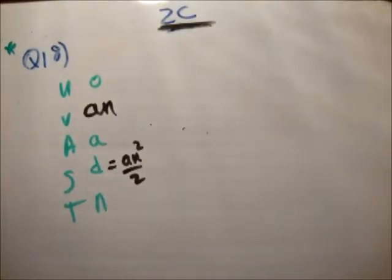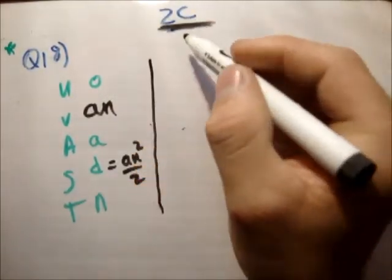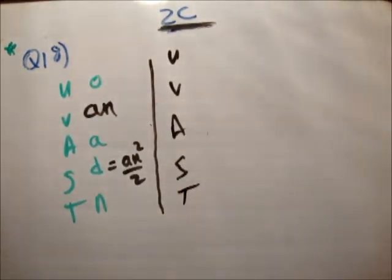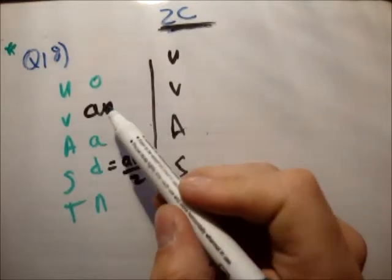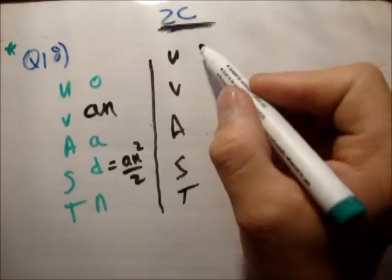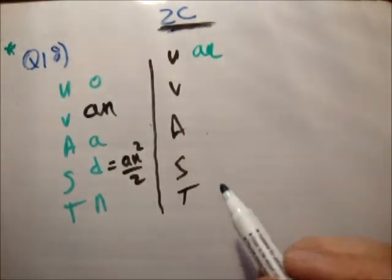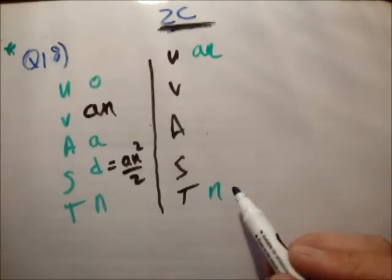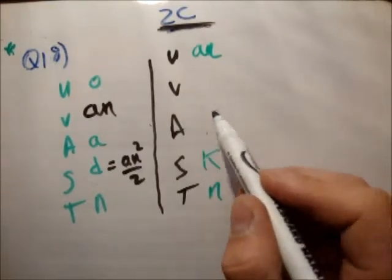So we're going to go for the second part of the motion. We're told that he travels a distance k in the next n seconds. So this is consecutively after part 1. So the final speed here is the initial speed up here. We know that it travels another n seconds. And we know that it travels a distance k. And the acceleration is the same.